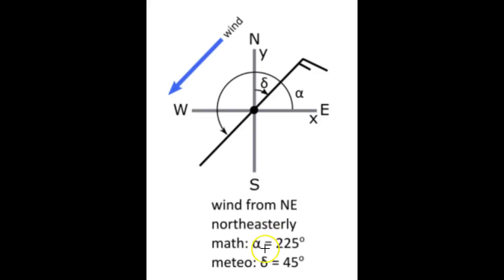So, for this case that we've drawn here, the meteorology angle equals forty-five degrees. So, the math angle equals two hundred and seventy minus forty-five, which is two hundred and twenty-five degrees.